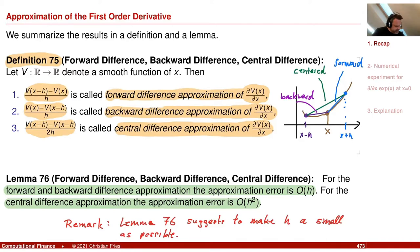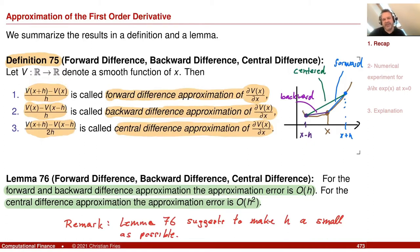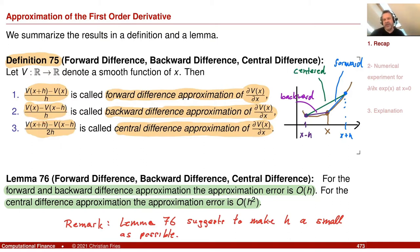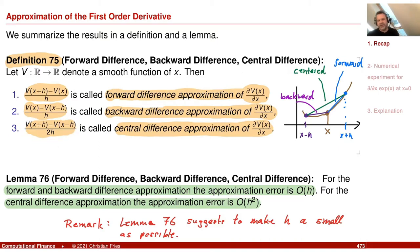So we had the forward finite difference approximation, v of x plus h minus v of x divided by h. And we had two different versions: v of x minus v of x minus h divided by h — the backward one — and the centered one, v of x plus h minus v of x minus h divided by 2h.